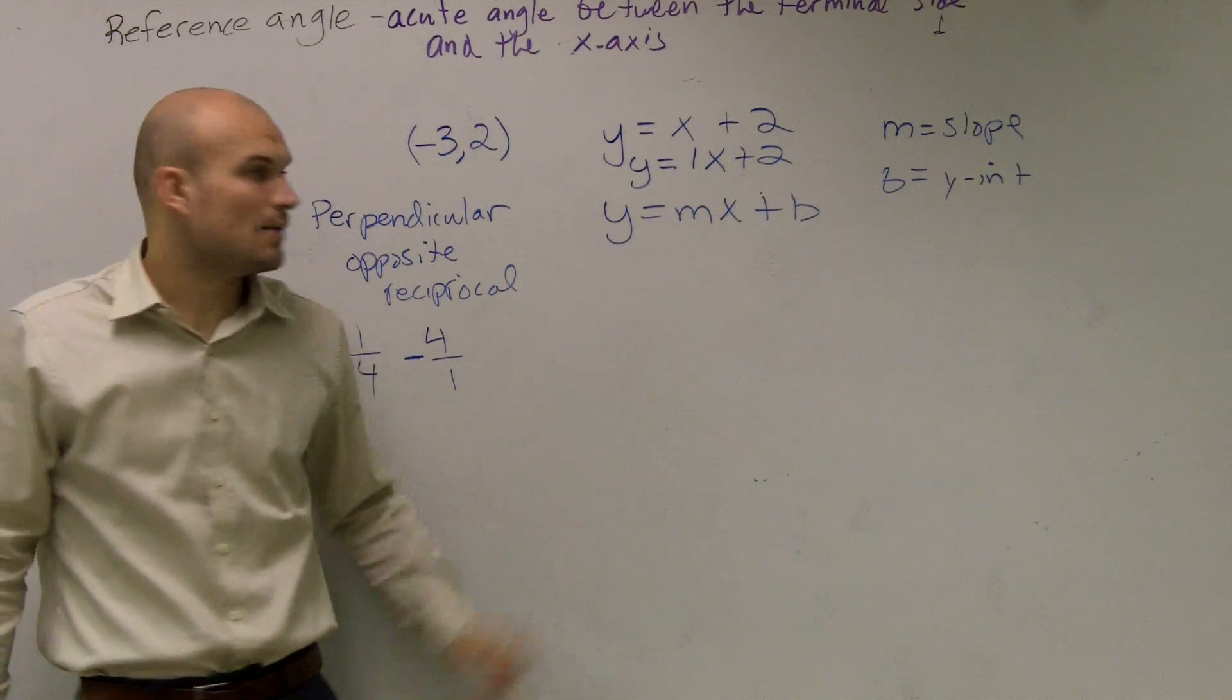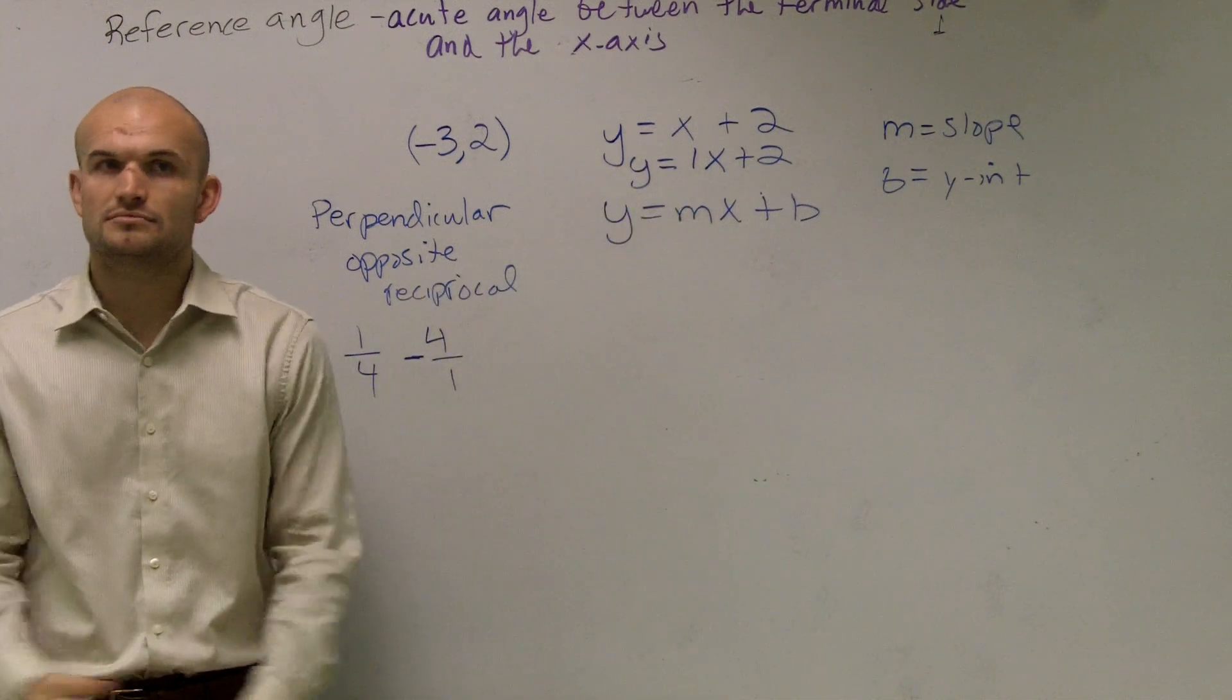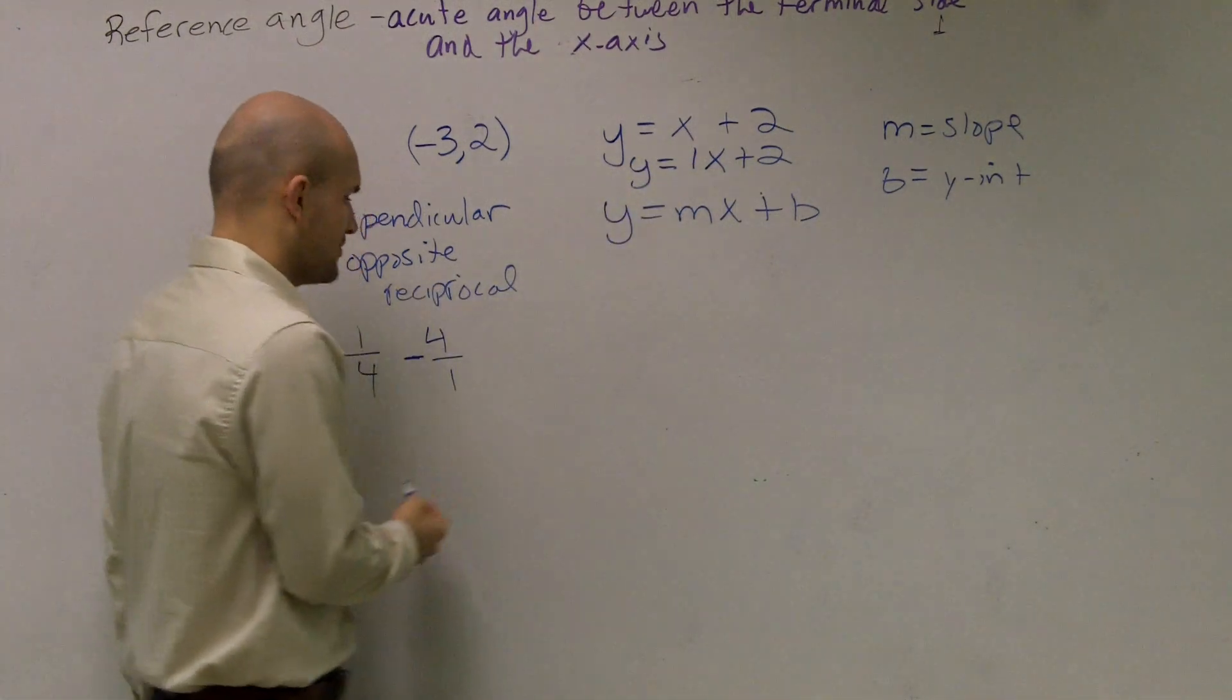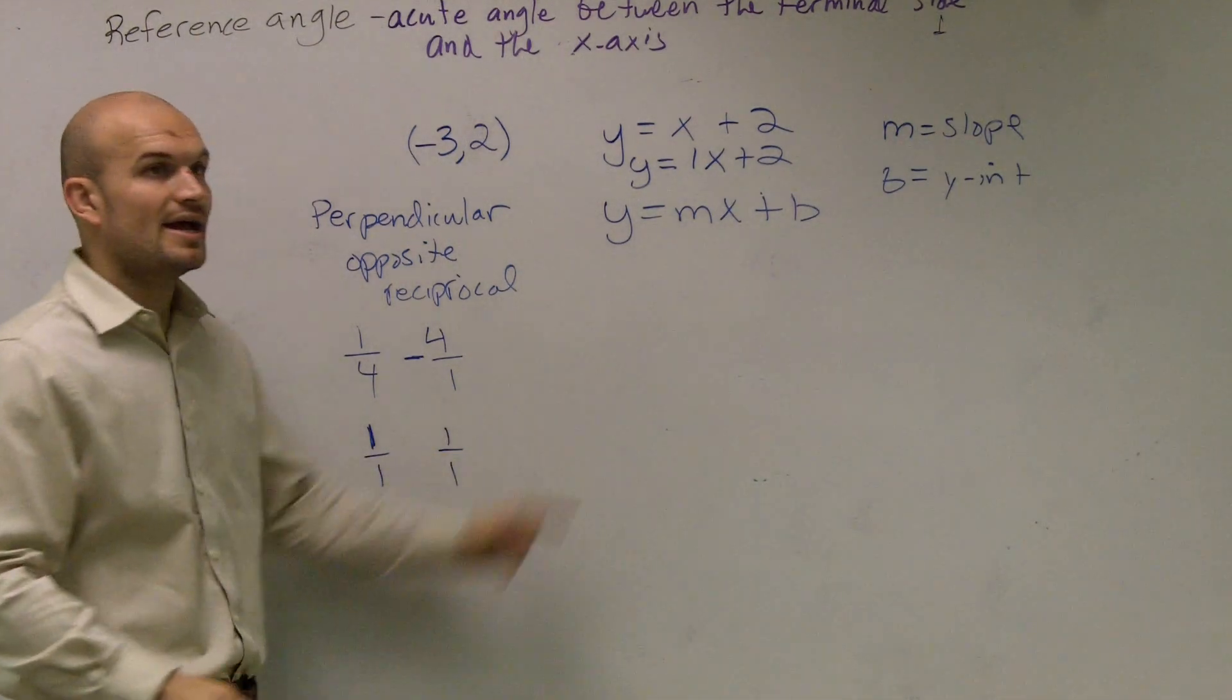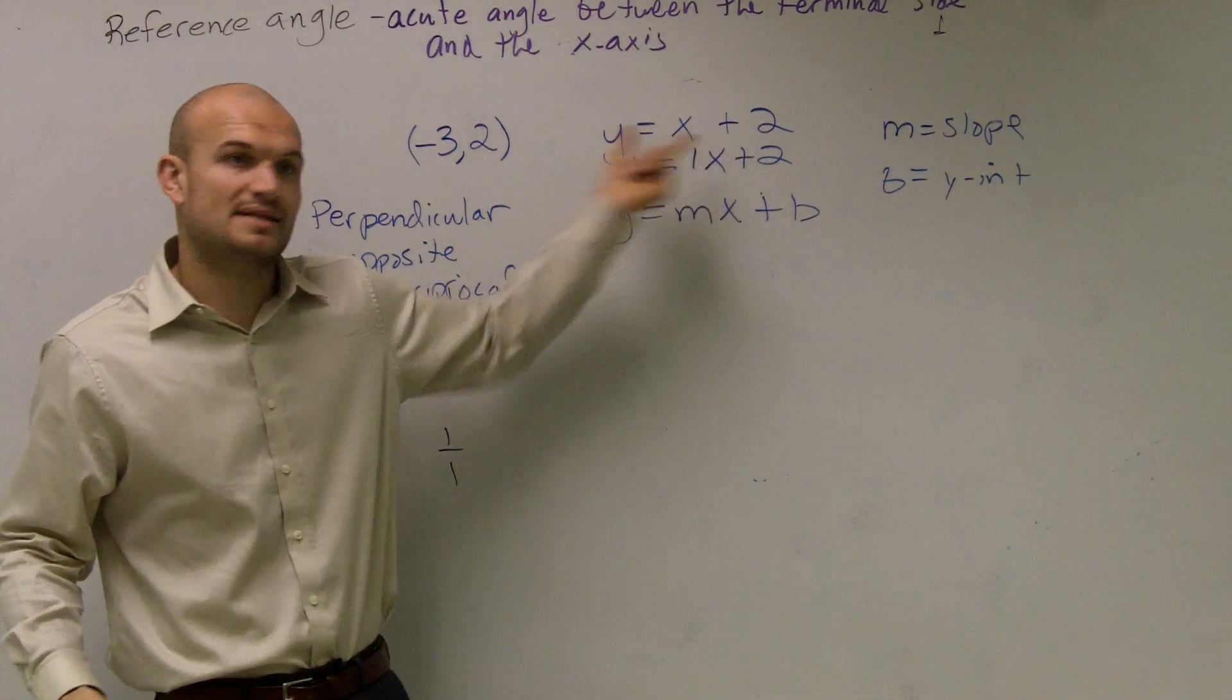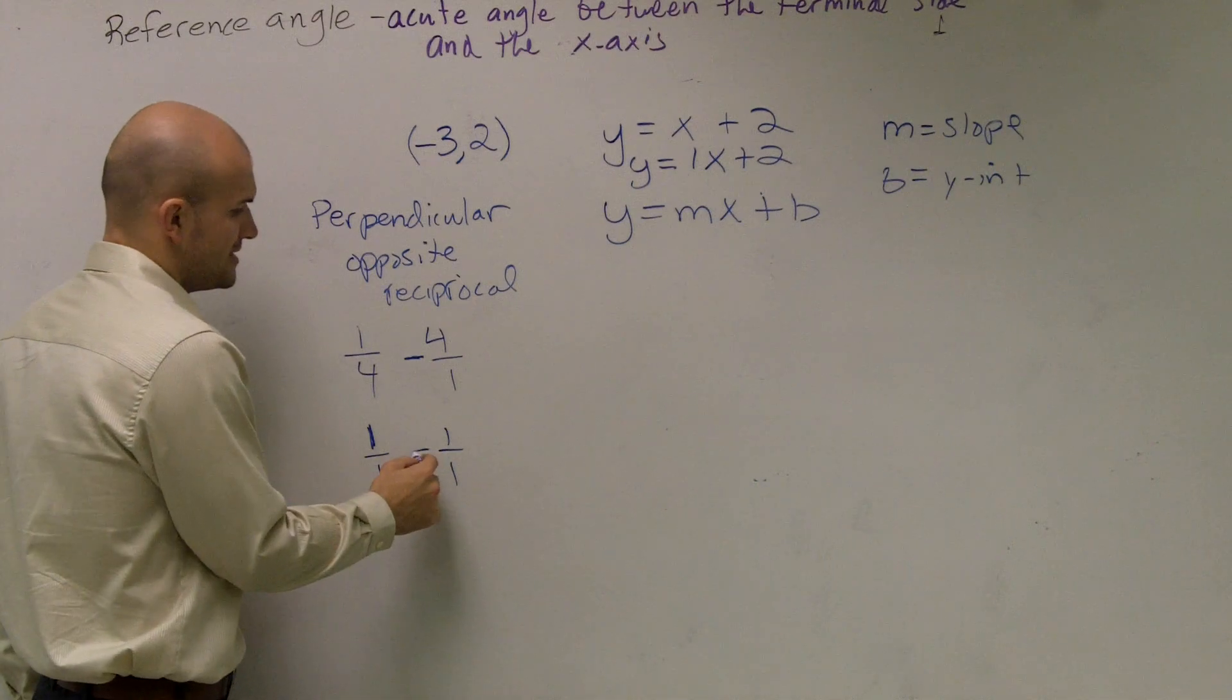So I need to look at what is the reciprocal of one? And you can say, well, the reciprocal of one over one is one over one. And since this is positive, to make it opposite, it's going to have to be a negative.